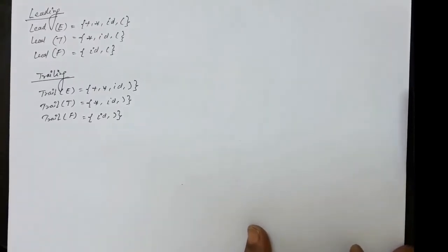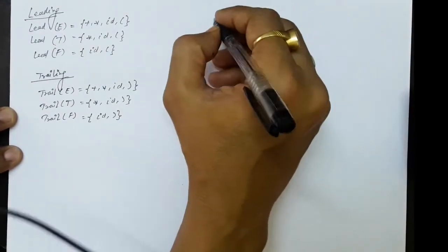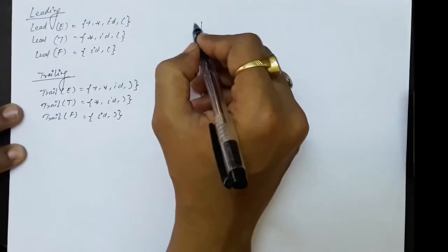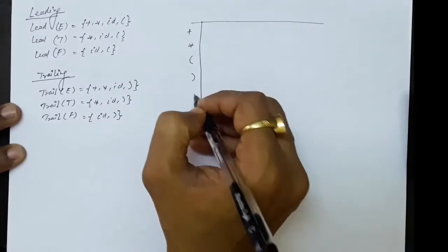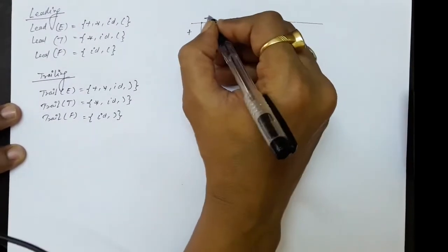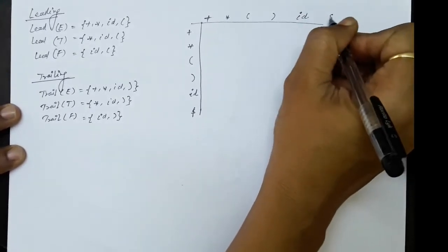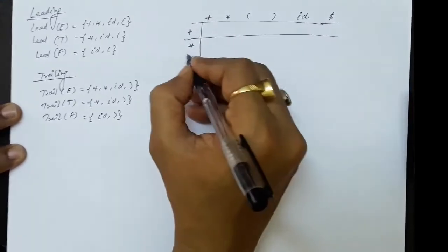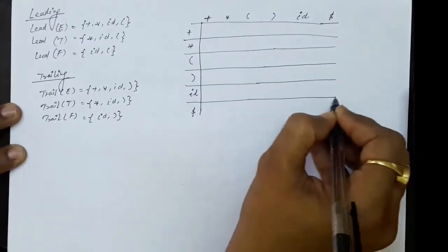In this lecture, we will make the operator precedence parsing table, having computed the leading and trailing sets in the previous lectures. The operator symbols we have are: plus, multiplication, opening parenthesis, closing parenthesis, id, and dollar. These same symbols appear on both the row and column sides of the table, which will help us in doing the parsing.